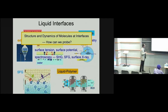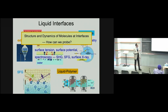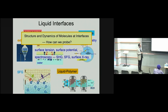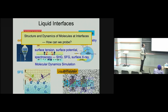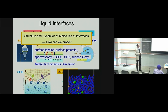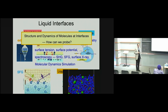Another example is surface-sensitive spectroscopy such as SHG, SFG, or surface X-ray. SFG uses two laser lights and detects the signal at the sum frequency. The beautiful point is it selectively detects the interface region even though the same molecules exist in the bulk. Another important method is molecular dynamics simulation, which allows us to investigate liquid interfaces as if we really see them.